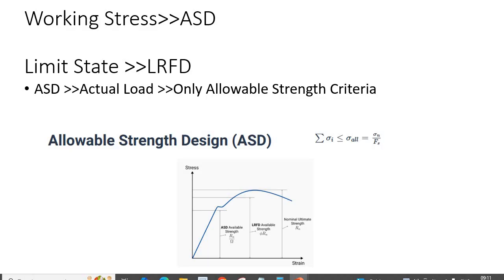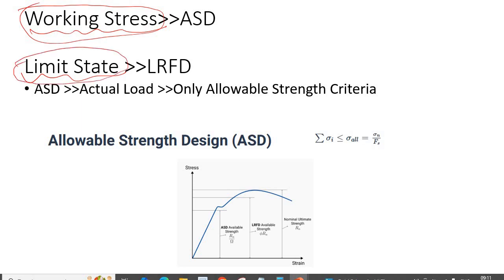In the subsequent slides, I will not use the terms 'working stress' or 'limit state' because these are very confusing words, at least for me. I personally don't prefer those words. Rather, I will use ASD for working stress and LRFD for limit state. Let me explain why.